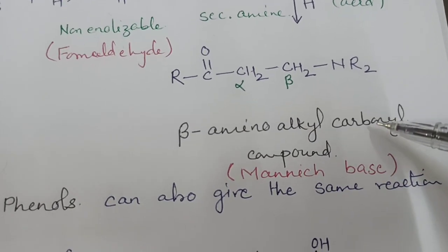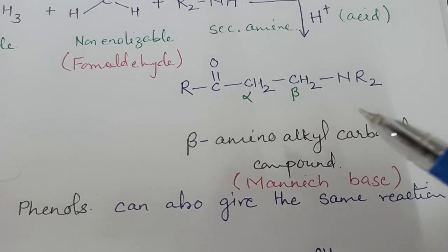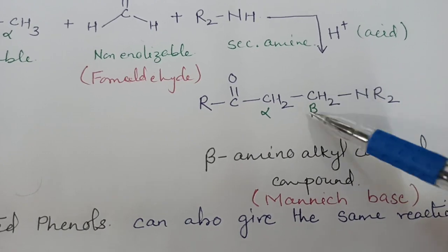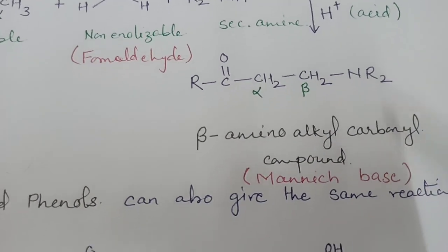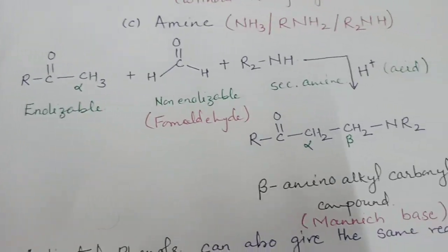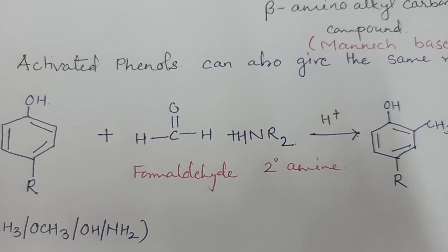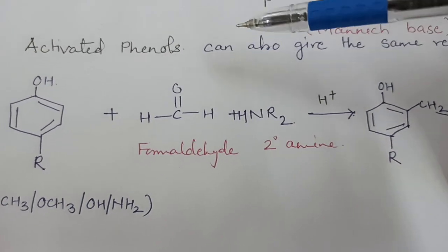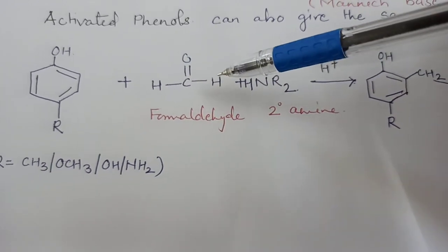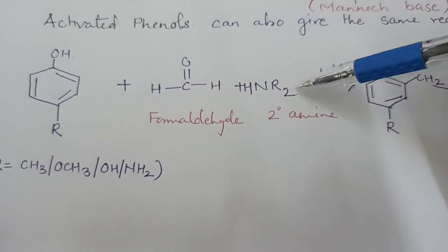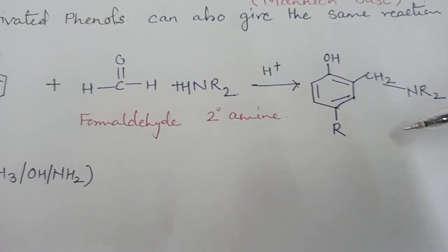The product of the Mannich reaction is always a beta-aminoalkyl carbonyl compound, meaning on the beta position of the carbonyl there will be an amino group. This is the general reaction of the Mannich reaction. The same reaction can also be found in activated phenols, which show the same condensation reaction with formaldehyde and amines in the presence of acid to form the Mannich product.